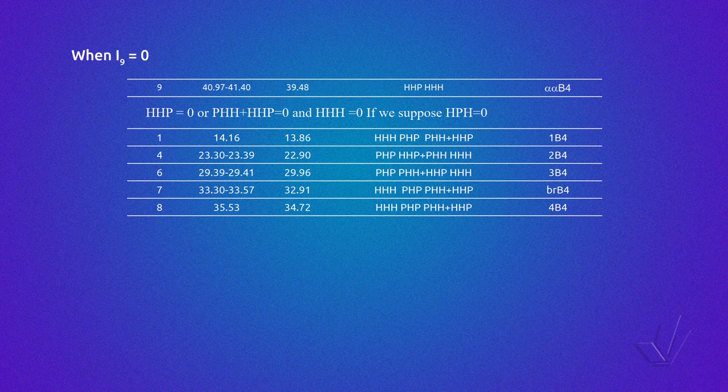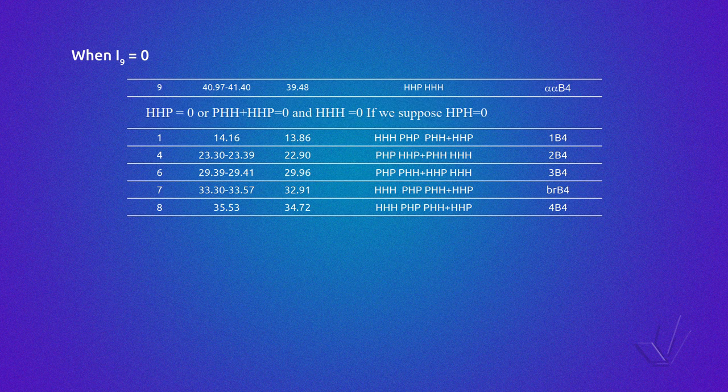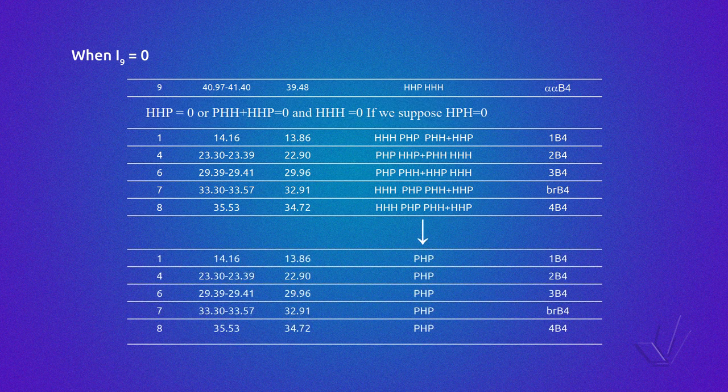The second case is when peak 9 is equal to 0, so triads HHH and HHP are equal to zero. As normally if HHP is not present, PHH is not present either, so PHH plus HHP is equal to zero. If we suppose that also HPH is not present, the table can be simplified and the triad PHP can be determined using the average of peaks 1, 4, 6, 7, and 8. When we have several peaks that represent the same triad, as in this case the triad PHP, we can use just one of these peaks or more. Normally, when we use more peaks and take the average, we minimize the integral error, which is sometimes significant.